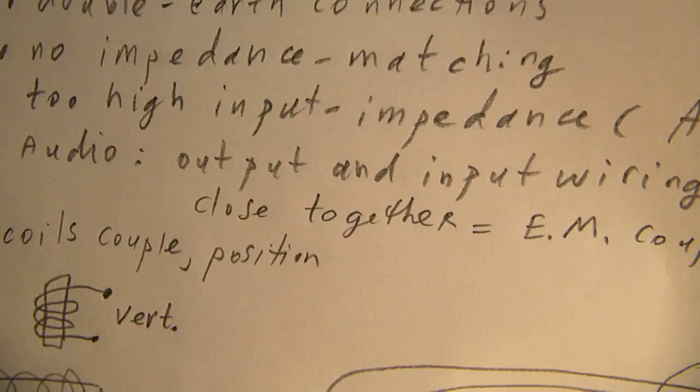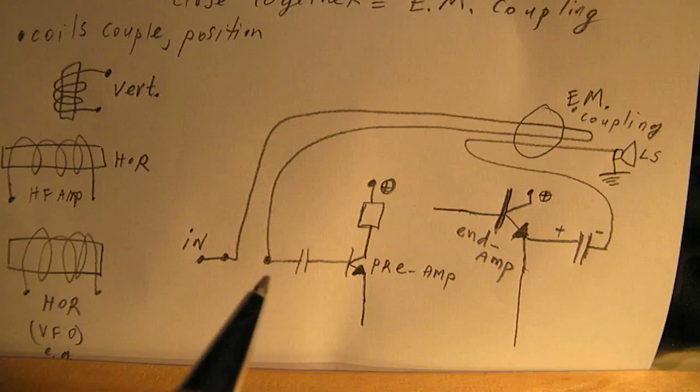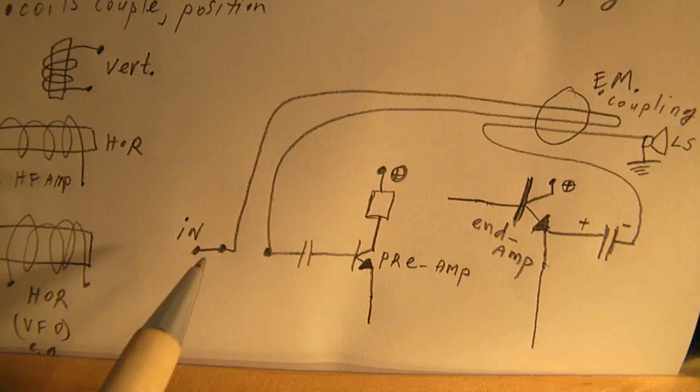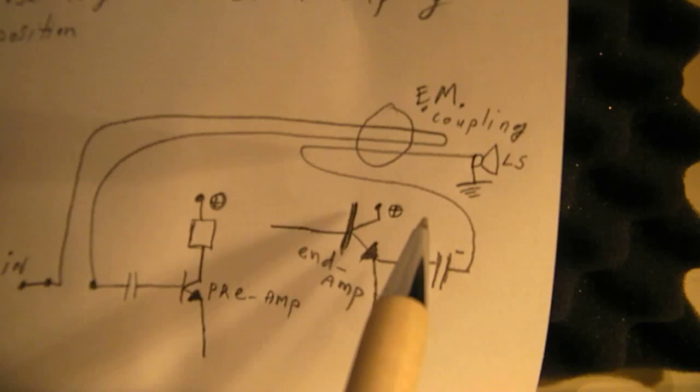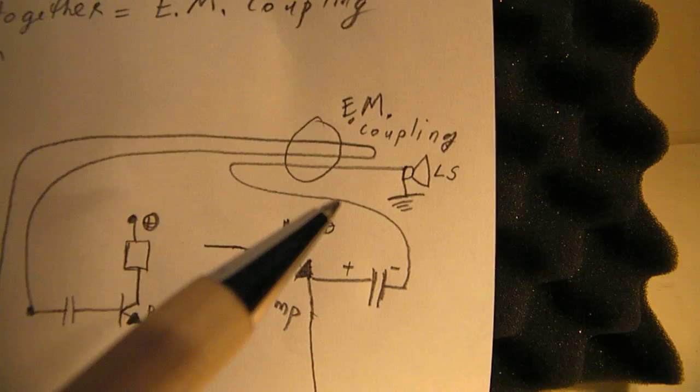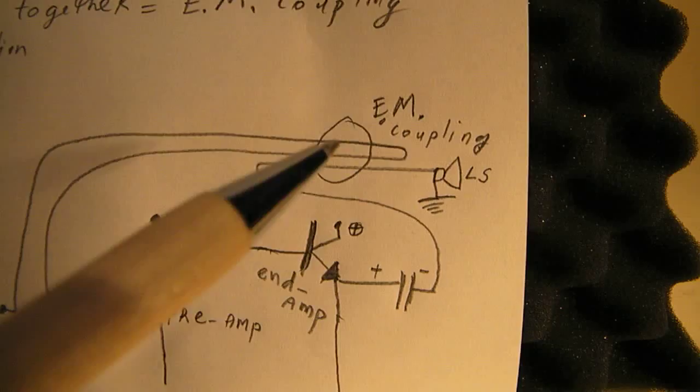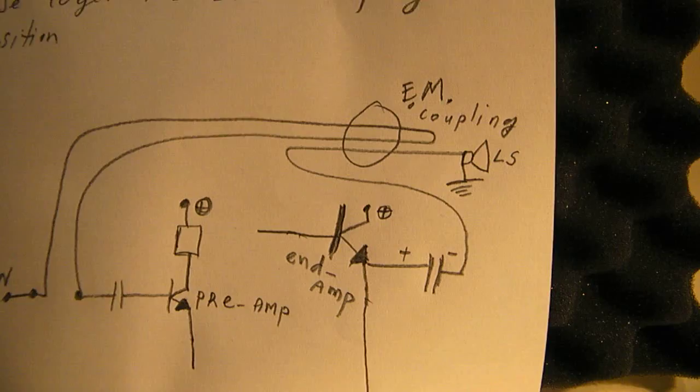Output and input wiring close together. Well, this is a quite exaggerated situation. Here we have the input from, say, a CD player, and that wiring is closely connected to the loudspeaker wiring. And here we have electromagnetic coupling in that case. And when the phase from such an electromagnetic coupling is not good, your amplifier will start to oscillate.